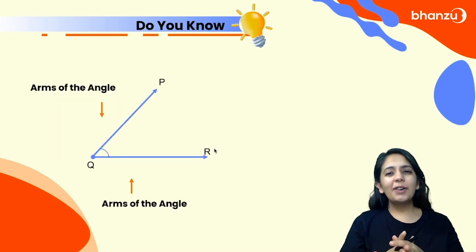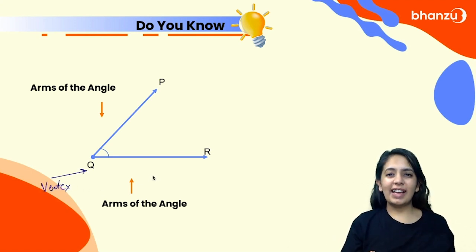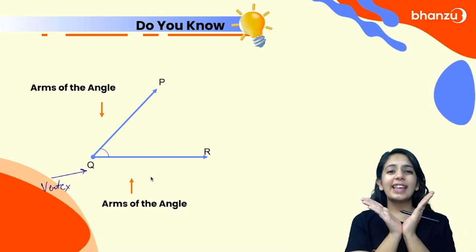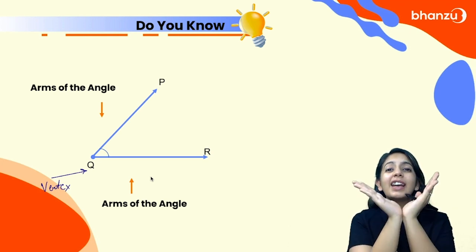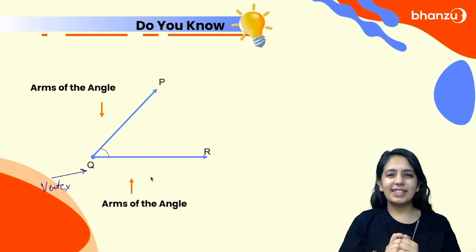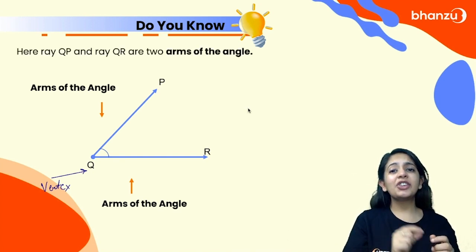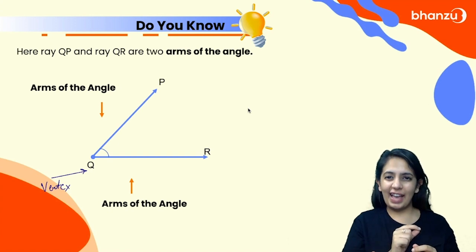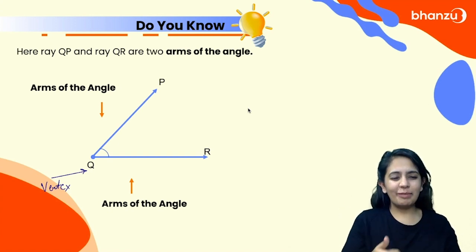There is a special thing to remember: just like vertex, we also have the arms of an angle. For example, if I hold my hands like this, my two palms are the arms of the angle, the space between them is the angle, and the connecting point — my wrist — is the vertex. Therefore, ray QP and ray QR are the two arms of the angle. Angles can be formed by two rays as well.